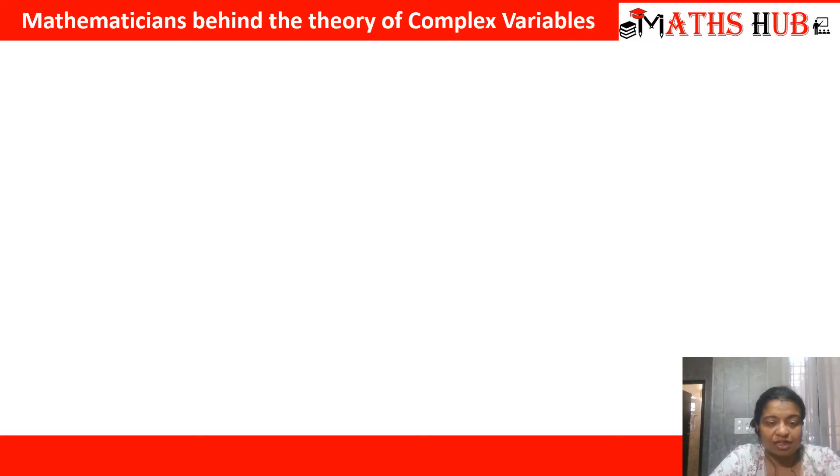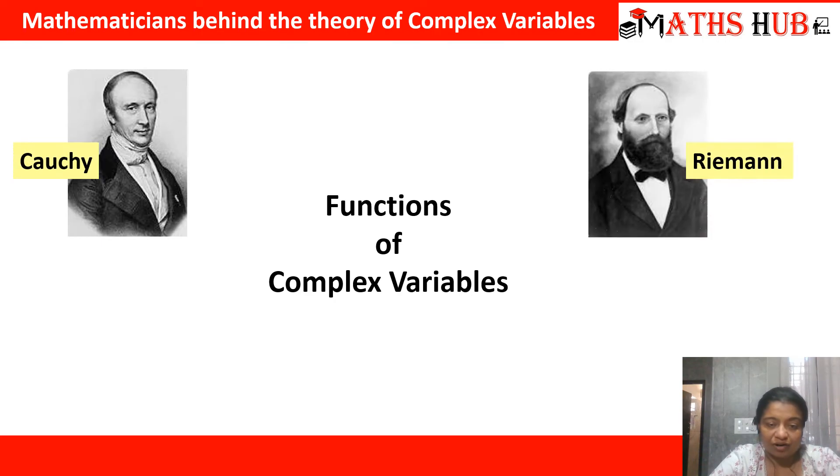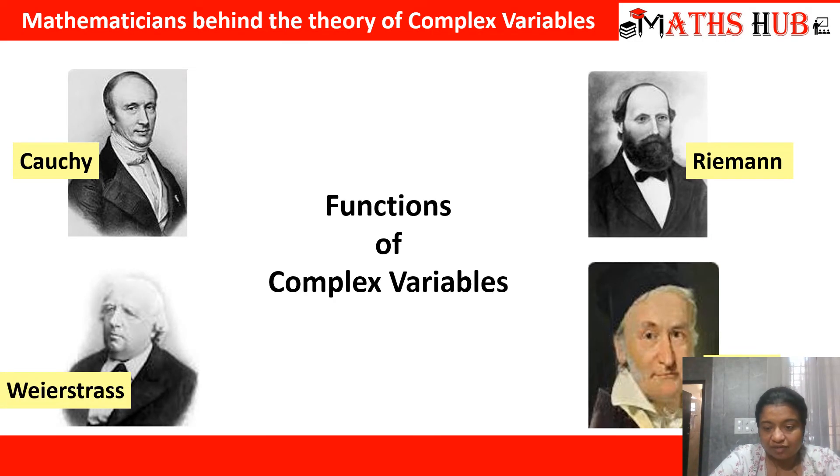So, who were all the mathematicians who were behind the theory of complex variables? We had Cauchy, we had Riemann, we had Weierstrass, and we had Legendre. All these mathematicians were behind the complex variables.